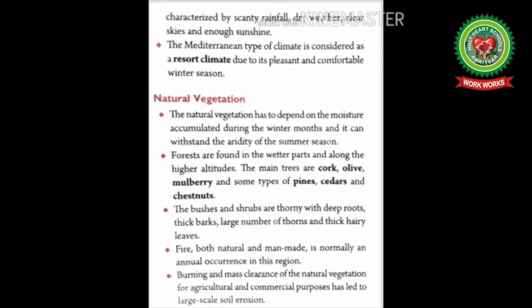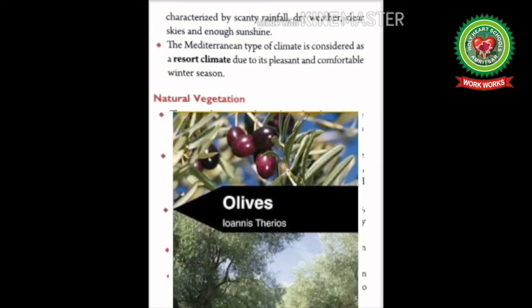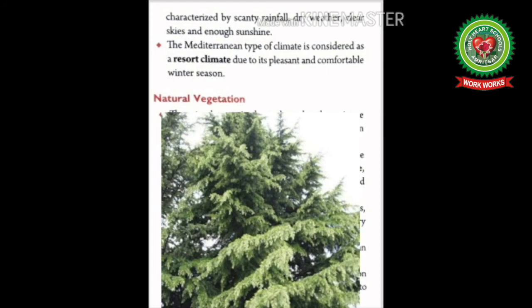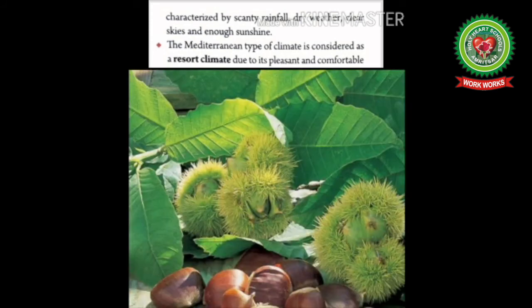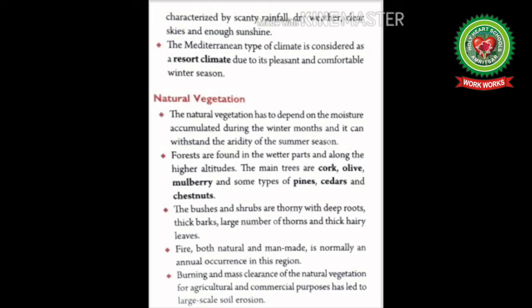Coming back to the reading, page 153 — Natural Vegetation: The natural vegetation depends on moisture accumulated during the winter months and must withstand the aridity of summer. Forests are found in the wetter parts and along higher altitudes. The main trees are cork oak, olive, mulberry, and some types of pines, cedars, and chestnuts. Bushes and shrubs are thorny with deep roots, thick barks, large numbers of thorns, and thick hairy leaves. Fire — both natural and man-made — is normally an annual occurrence. Burning and mass clearance of natural vegetation for agriculture and commercial purposes has led to large-scale soil erosion.